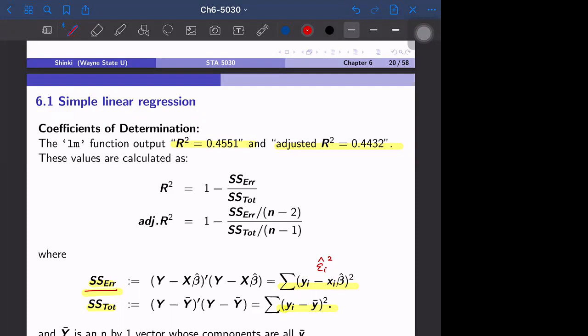So if R-square is 0.4551, that means 45.51% of variation in y is explained by the predictor.